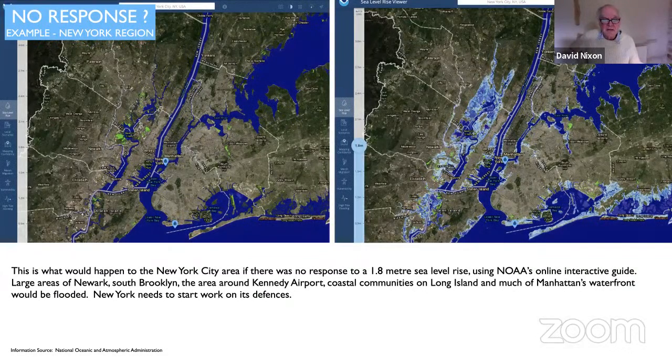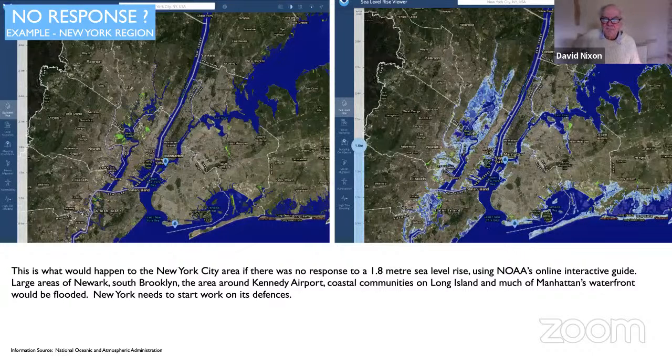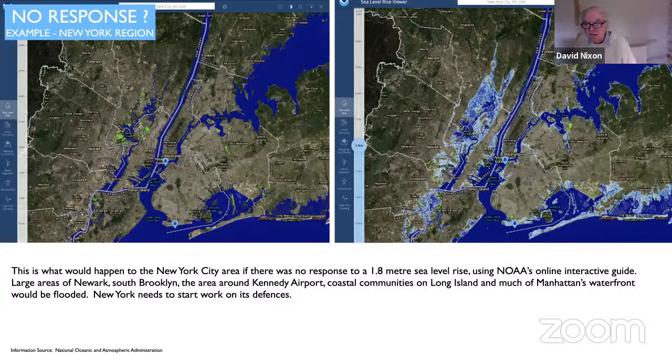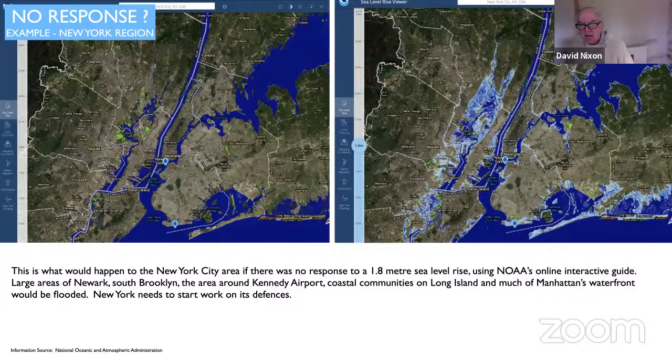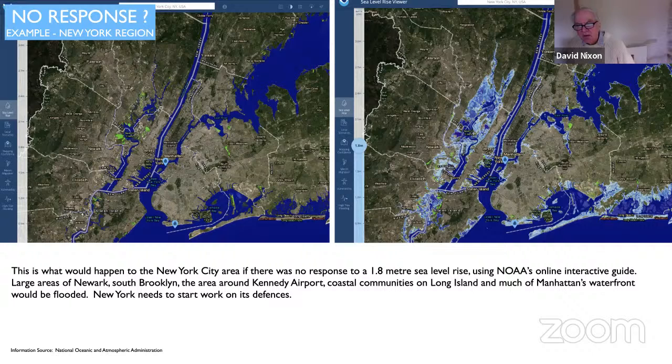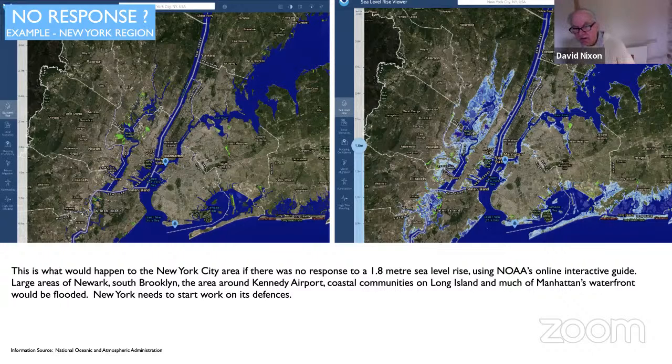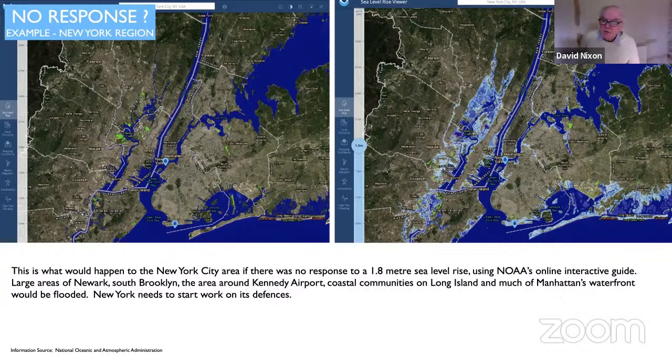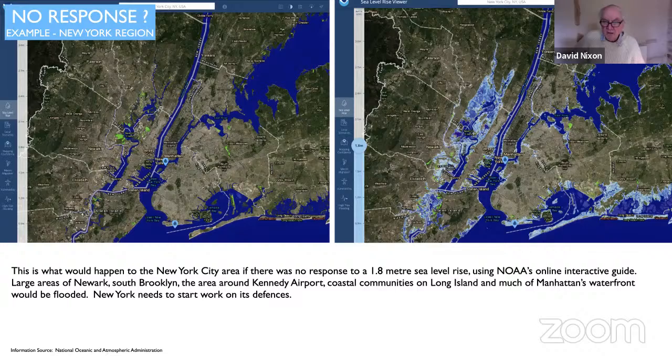Here's another example of no response, which is New York, the New York area. These two photographs show what the impact would be of a 1.8-meter sea level rise on the New York region. You've got a major inundation of land in New Jersey. New York and Manhattan itself will lose a lot of the waterfront that is vital to New York's commercial day-to-day operations. And the area of Brooklyn that faces the Atlantic, a lot of that land will be gone. That would be the impact on the New York area from a 1.8-meter sea level rise, which New York is now getting quite concerned about.